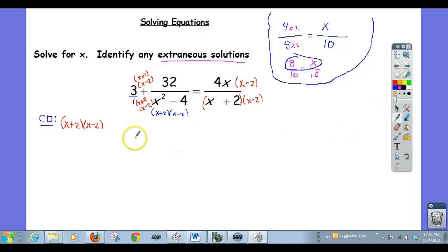I've got 3 times, now x plus 2, x minus 2. I can write that out, but it also is x squared minus 4 if you multiply that out. So I'm going to just write this as 3 times x squared minus 4, divided by x squared minus 4, plus 32 over x squared minus 4.